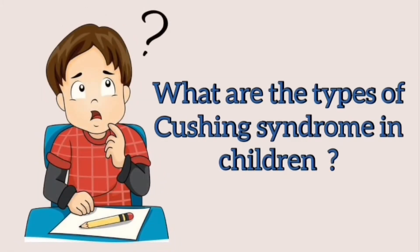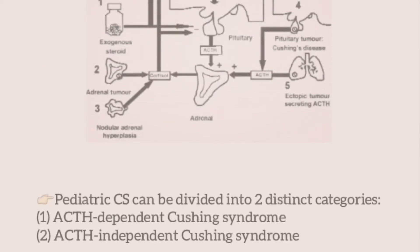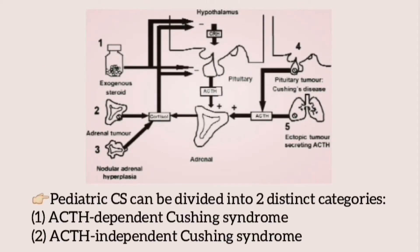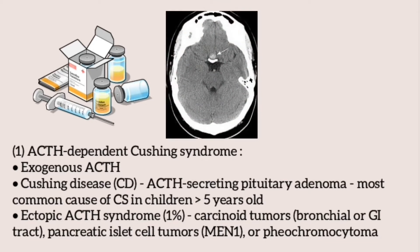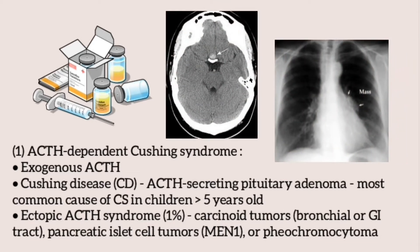Pediatric Cushing syndrome can be divided into two distinct categories: ACTH-dependent and ACTH-independent. ACTH-dependent Cushing syndrome is caused by exogenous ACTH administration, as in certain seizure disorders. Cushing disease, which is an ACTH-secreting pituitary adenoma, is the most common cause in children older than five years. Ectopic ACTH secretion can arise from carcinoid tumors of the bronchial or GI tract, pancreatic islet cell tumors — especially in multiple endocrine neoplasia type 1 — and pheochromocytoma and other neuroendocrine tumors.